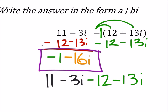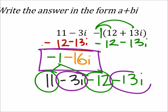Once again, the 11 and the negative 12 will combine to make that negative 1. And then this negative 3i and this negative 13i will give us the negative 16i.